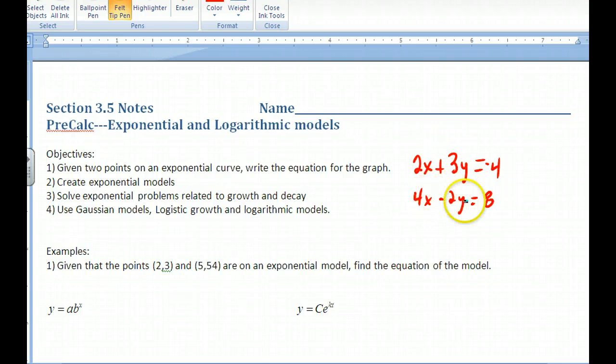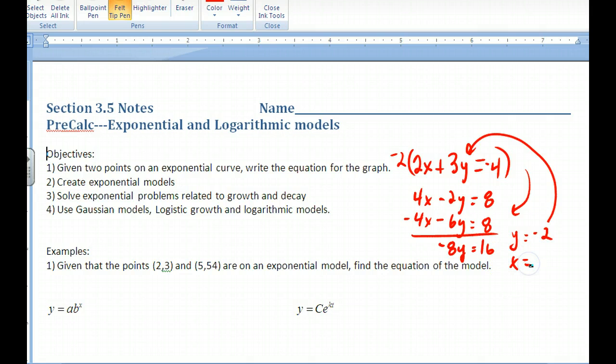We want to eliminate one of the variables and solve for the other. I'm going to multiply this whole equation by -2. I'm going to get -4x - 6y = 8. I'm going to add these together. The x's drop out. We eliminated one variable and we're left with the other. So y = -2. Once we solve for one of the variables, we go back and substitute it and solve for the other variable. You'd find that x = 1.